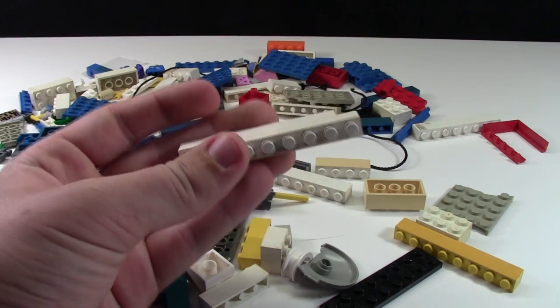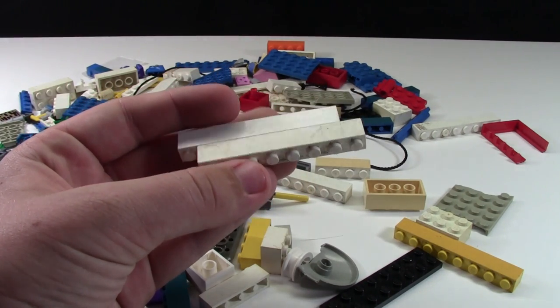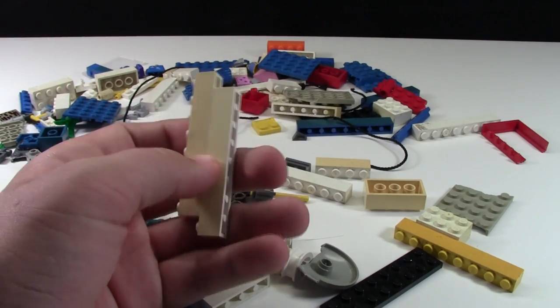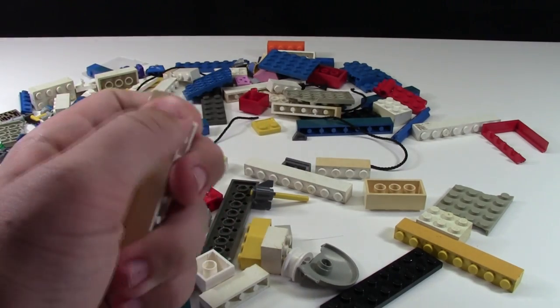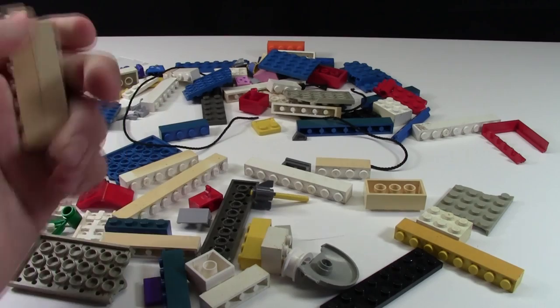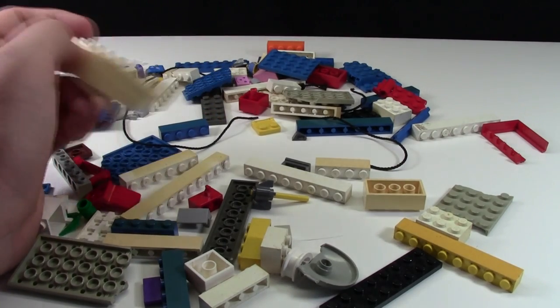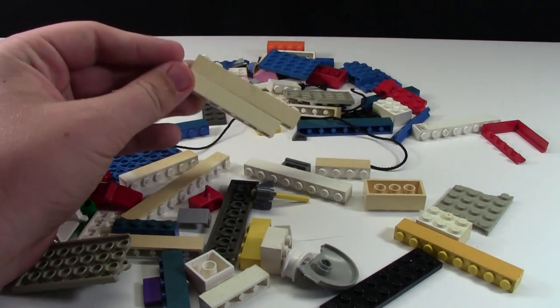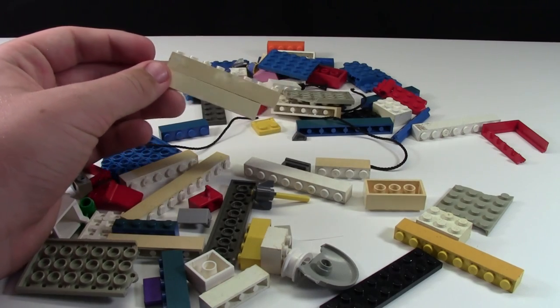Or these yellow bricks—they're not even yellow anymore, they're like white. A lot of the things I have here were from used lots I purchased on Craigslist or Kijiji in Canada. I find a lot of people smoked around their LEGO, and this is what happens to the colors.